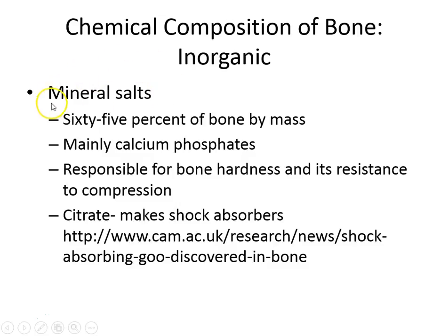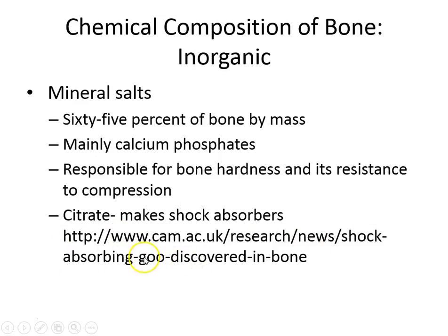Most of bone's mass is these hard mineral salts — the calcium phosphates make up the lamella and make it really hard. And there's citrate — that's the discovery showing the gel inside the collagen tubes, giving bones a little more flexibility.